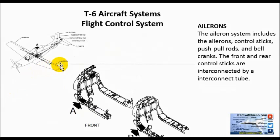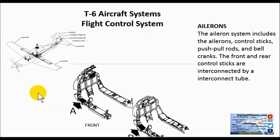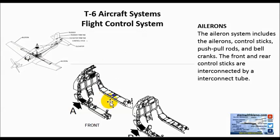Let's talk about the aileron systems. The aileron systems are the outboard control surfaces on the wingtips, or closest to the wingtips. You have the flaps on the inside, but we're not going to talk about them right now. The aileron system includes ailerons, the control sticks, push-pull rods, and bell cranks. The front and rear control sticks are interconnected by an interconnect tube.